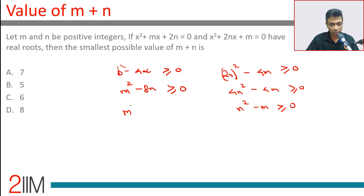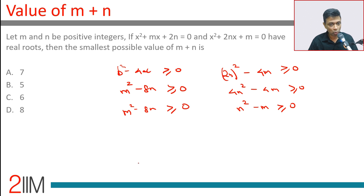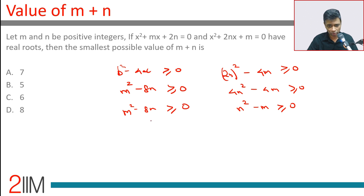So we have two conditions: m² - 8n ≥ 0 and n² - m ≥ 0. Rather than solving this algebraically, we plug in values. From now on we want m plus n to be as small as possible, using positive integers.